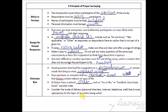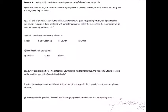Consider the mode of delivery. Is it a personal interview? Are they being asked these questions over the internet, telephone, mail that is most appropriate for the types of questions being asked? Example one, identify which principles of surveying are not being followed in each example. So in a telephone survey, the surveyor immediately began asking the respondent questions without indicating that a survey was being conducted.